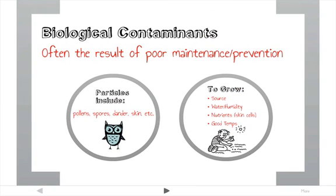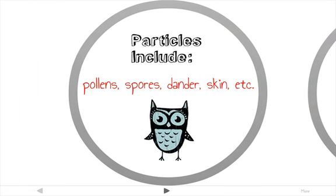There are also biological contaminants, not just chemical contaminants. These include pollens, spores, dander, skin scales, ground food particles like coffee, and urine from rats and mice, which can become airborne when dry.